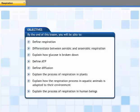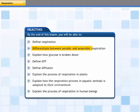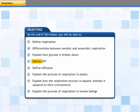This lesson is about the process of respiration. By the end of this lesson you will be able to: define respiration, differentiate between aerobic and anaerobic respiration, explain how glucose is broken down, define ATP, define diffusion, and explain the